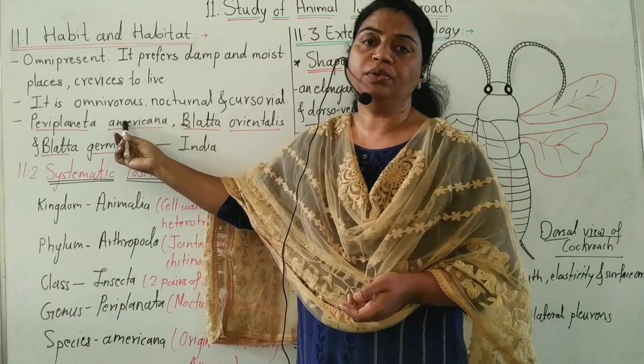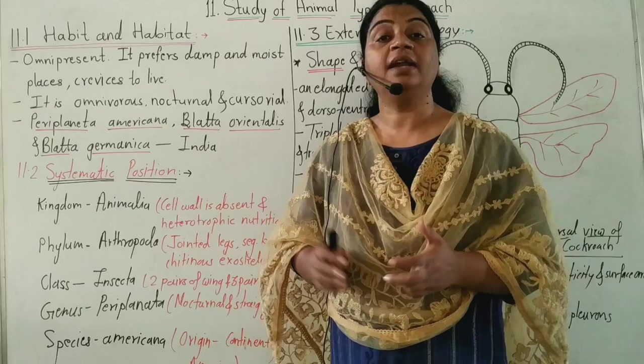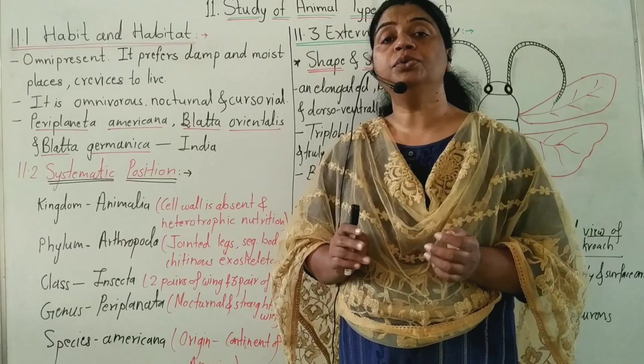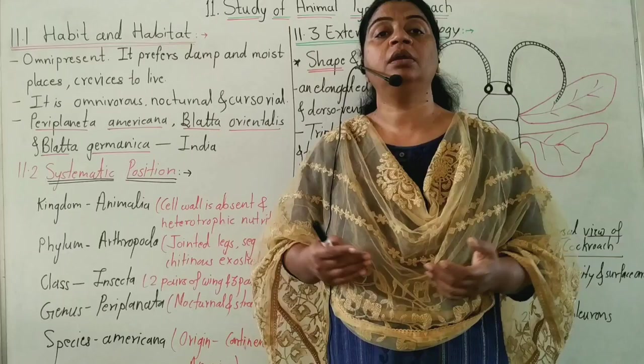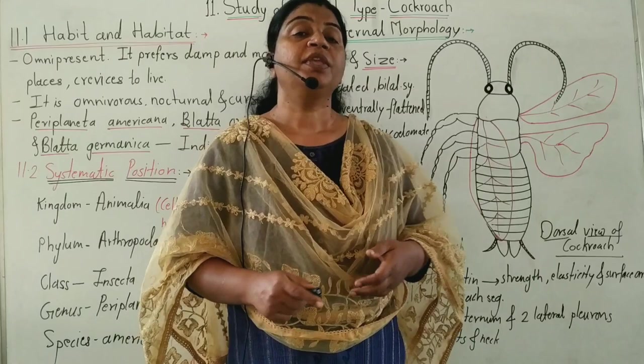They are nocturnal, meaning they come out from their place at night. They eat, reproduce, and carry out all their activities during the night, so they are called nocturnal. Cursorial means they are adapted for running. With the help of their long three pairs of legs they run, and this is called cursorial adaptation.